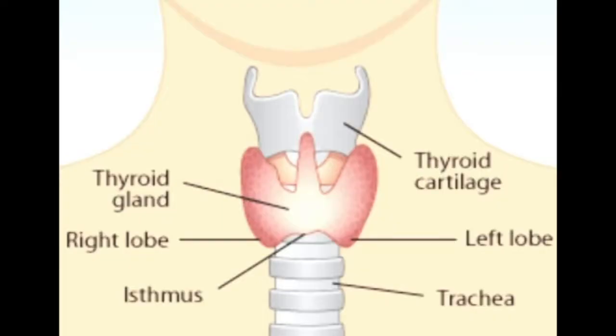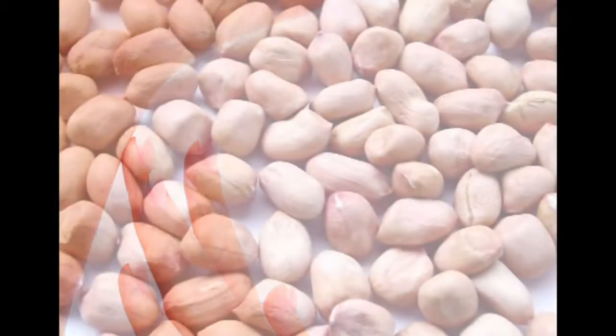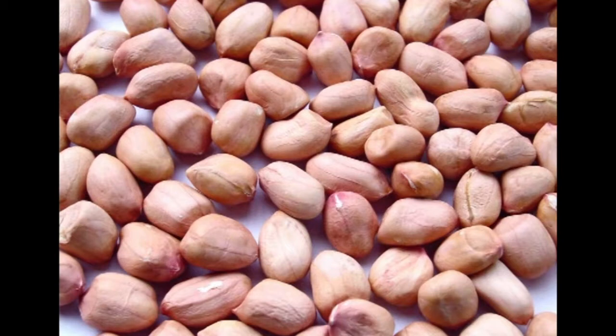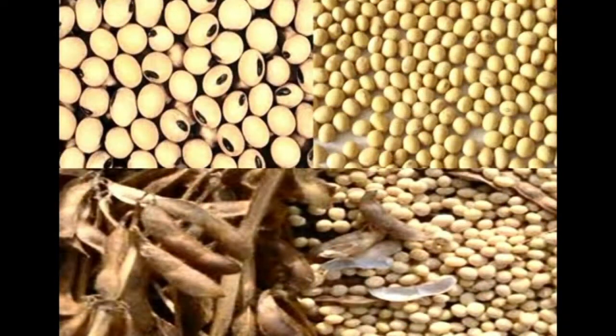Phytates are found in pulses because of the high levels of phosphorus which convert into phytate phosphorus, interfering with the bioavailability and digestion of various minerals as well as proteins and carbohydrates. Goitrogens are substances which prevent the thyroid gland from taking up iodine, causing iodine deficiency in the thyroid gland. These are mostly found in groundnuts and soybeans.